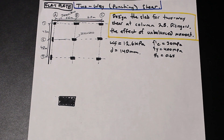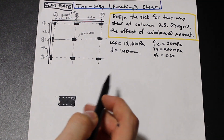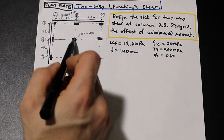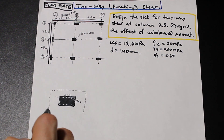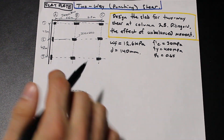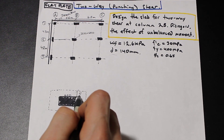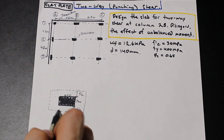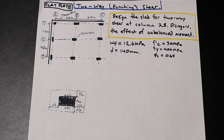We're going to solve this using the Canadian code standards, though the concept is the same in other countries with slightly different values. First, we need to find our critical area. In one-way shear the critical area is in one direction, but this one's in two. We have a 600 by 300 column, and we draw the critical area as a dotted line around the column. The dimensions of this critical area are each side of the column plus d — the effective depth of 140 mm — so d/2 on each side, giving 740 mm and 440 mm.